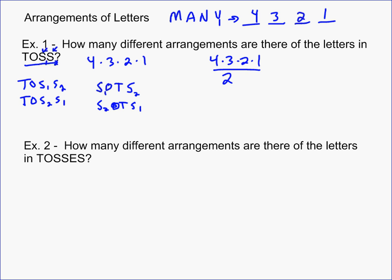And so we end up with the 24 on the top divided by 2. And so there are actually 12 ways to take the letters from TOSS and create new words.